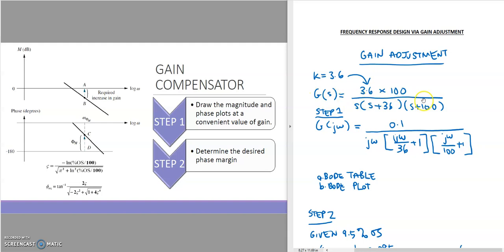For example, this is the open loop transfer function given in the question with K equal to 3.6. The original transfer function is K multiplied by 100, divided by three poles: a pole at the origin, a pole at negative 36, and a pole at negative 100. In Step 1, to draw the magnitude and phase plot, we convert this open loop transfer function from the s-domain into the frequency domain by replacing s with jω, rearrange the transfer function into standard form, construct the Bode table, and then plot the magnitude and phase.